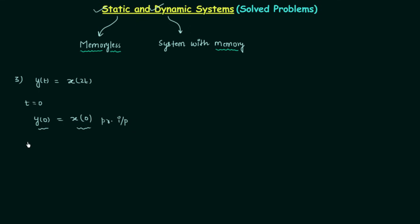But your answer will be incorrect, because if you remember the last lecture, I told you that in many cases when t equals 0 you will find the nature of the system appears static, but when you put t equal to some other value not equal to 0 you may find the system is dynamic. So it is good to check for other values of t also.